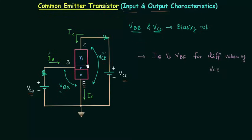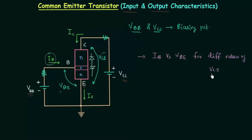We can also consider the NPN transistor as two diodes connected back to back. The input current IB is the current through the forward-biased diode, and VBE is the voltage across this diode. This diode is forward biased, so we have the forward bias characteristics of a diode as the input characteristics of the common emitter transistor. The important thing is the variation in characteristics due to the output voltage VCE.